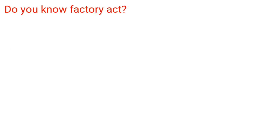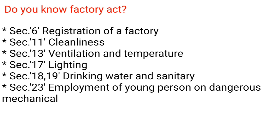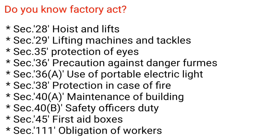Factory Act sections: Sec.6 Registration of a factory. Sec.11 Cleanliness. Sec.13 Ventilation and temperature. Sec.17 Lighting. Sec.18-19 Drinking water and sanitary. Sec.23 Employment of young persons on dangerous machinery. Sec.28 Hoists and lifts. Sec.29 Lifting machines and tackles. Sec.35 Protection of eyes. Sec.36 Precaution against dangerous fumes. Sec.36A Use of portable electric light. Sec.38 Protection in case of fire. Sec.40A Maintenance of building. Sec.40B Safety officer's duty. Sec.45 First aid boxes. Sec.111 Obligation of workers.